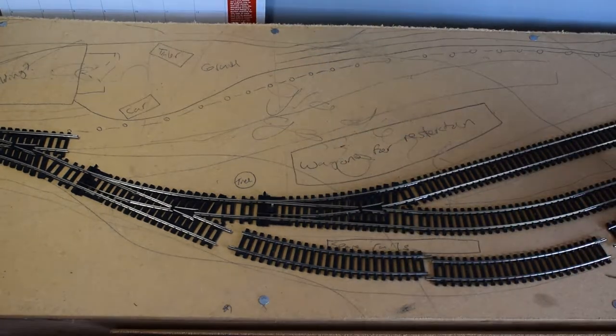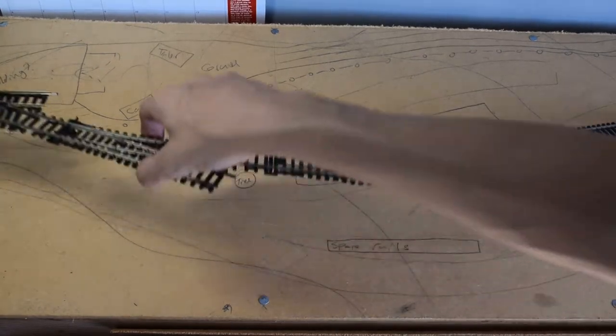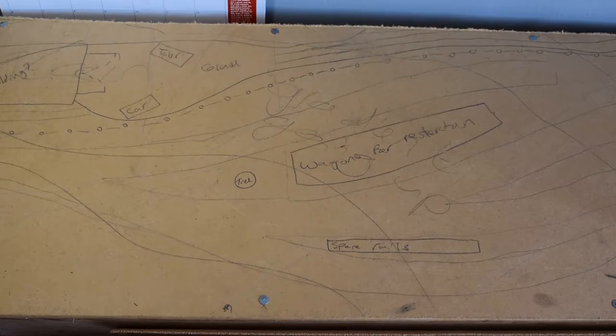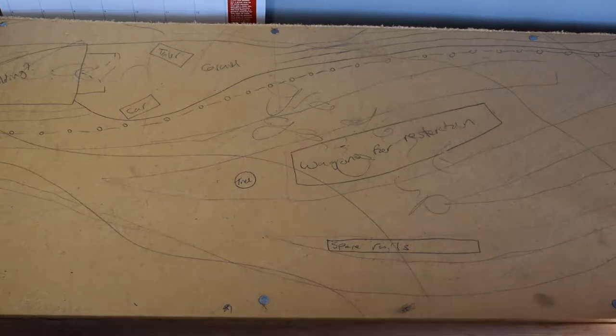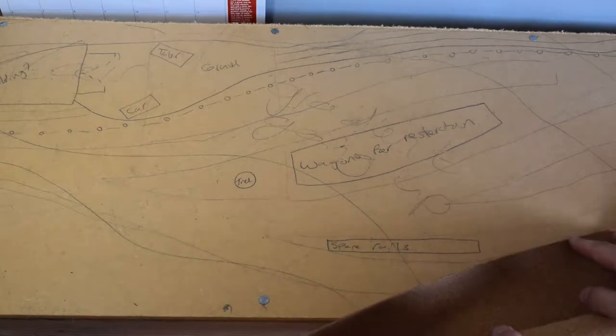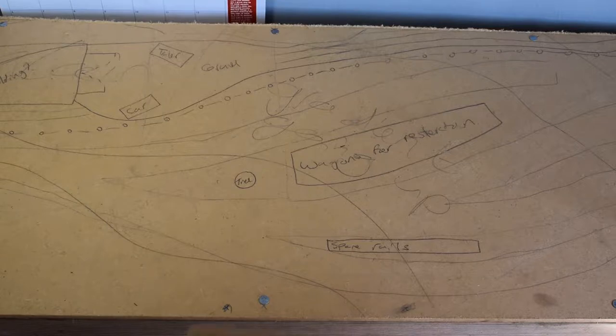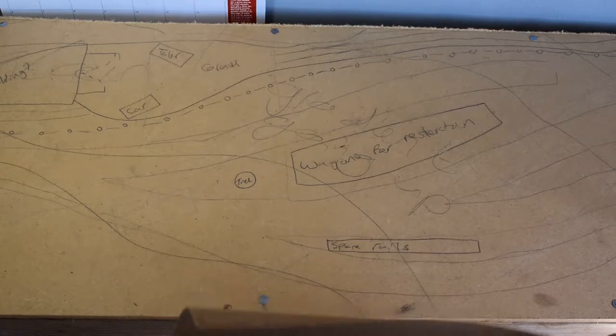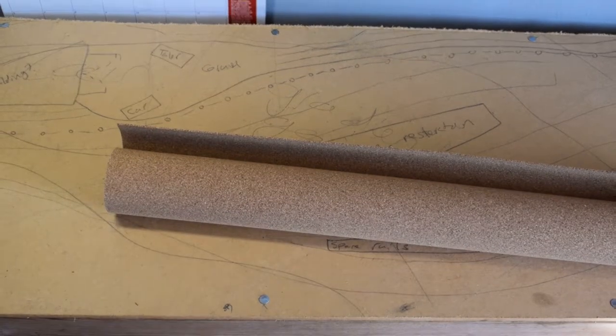First we need to remove all this track. Luckily I have marked out where my tracks are going to go, so I can mark it out again on the cork, trying to use as little of it as I can so I don't waste it. Time to get a pencil and some scissors.